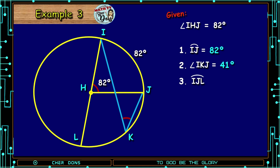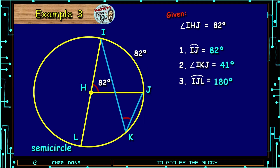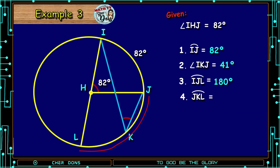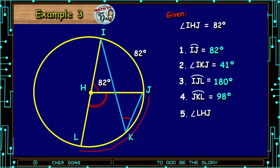For number three, we're looking for arc IJL. This is a semicircle, so it is equal to 180 degrees. For number four, arc JKL is part of arc IJL, which equals 180 degrees, and arc IJ equals 82 degrees. So 180 degrees minus 82 degrees equals 98 degrees. Therefore, arc JKL is equal to 98 degrees. For number five, the measure of Angle IKL is equal to 90 degrees.